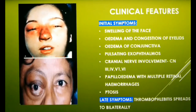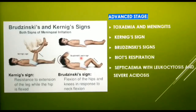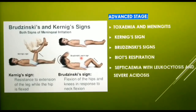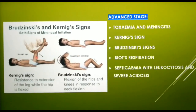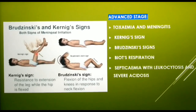If left untreated, late symptoms develop including thrombophlebitis spreading to the other side with bilateral signs. In advanced stages there may be signs of toxemia and meningitis. A positive Kernig's sign can also be elicited — it is severe stiffness of the hamstrings causing inability to straighten the leg when the hip is flexed to 90 degrees.